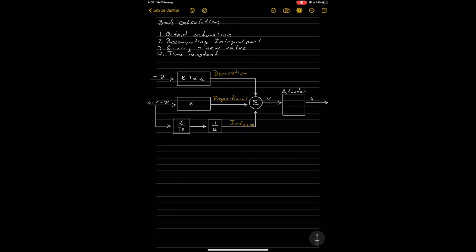Here we can see a normal PID control system. Here is stated the derivative, the proportional and integral part with its components. All of them are connected to a summation function at the end that creates an output signal called V. This signal enters the actuator and the actuator gives another output signal called U. What the back calculation does is create a new error signal with subtraction of the output of the actuator and the output of the PID controller.